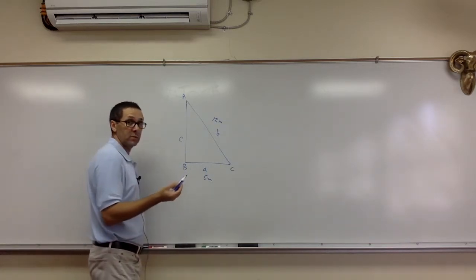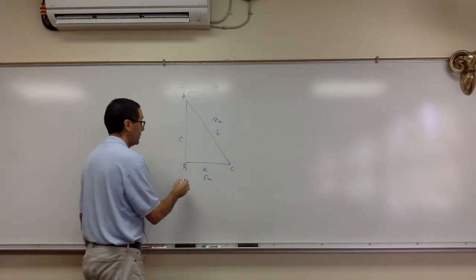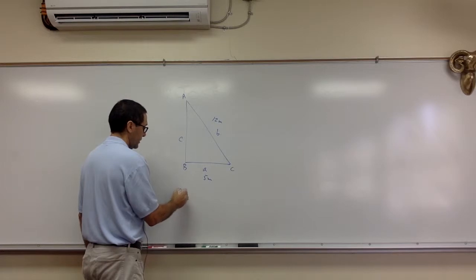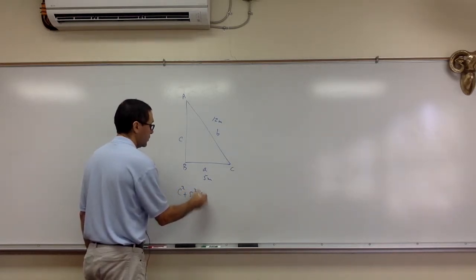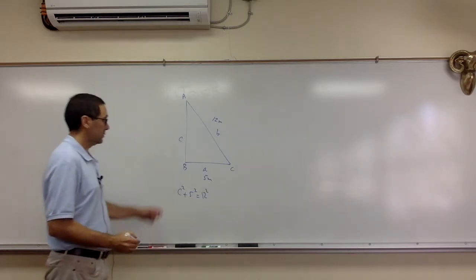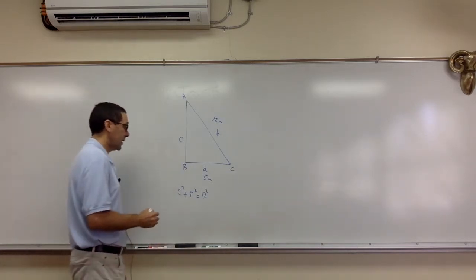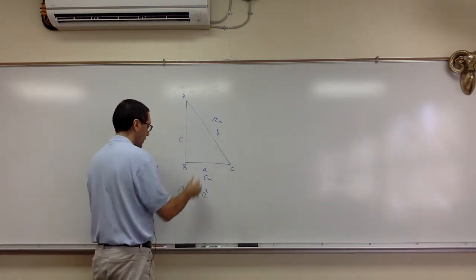So now we're going to use Pythagorean theorem. So it's going to be something like this. C squared plus 5 squared equals 12 squared. So you square the other side. The two sides, you add them up, and that should equal the hypotenuse squared.